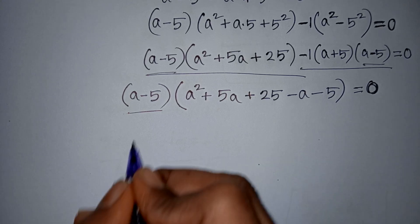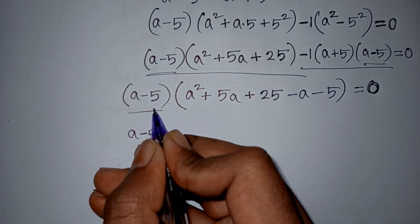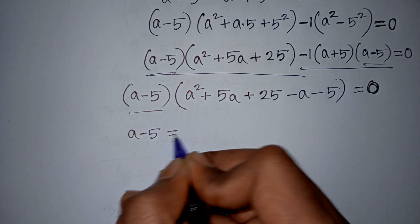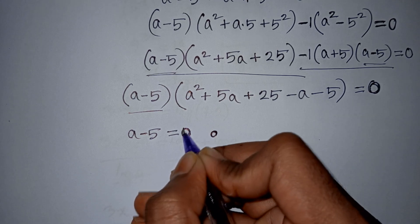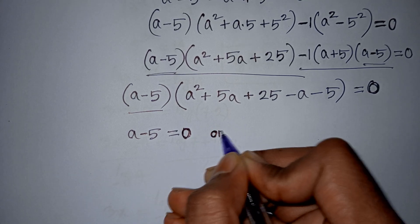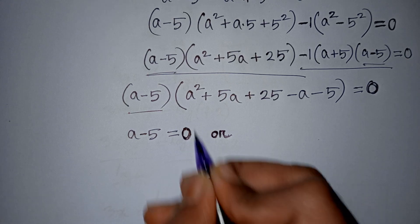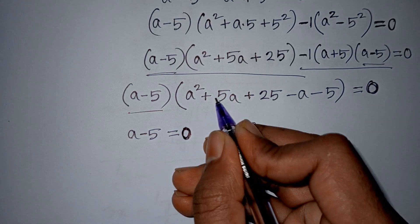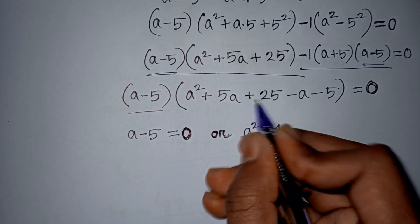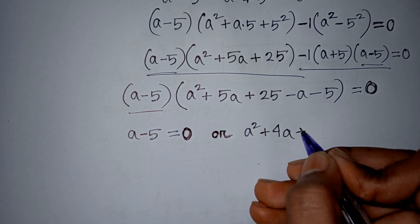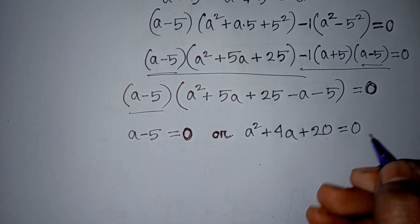Now, we can write a minus 5 is equal to 0, or a² plus 5a minus a, that means plus 4a, and plus 25 minus 5, that means plus 20, is equal to 0.